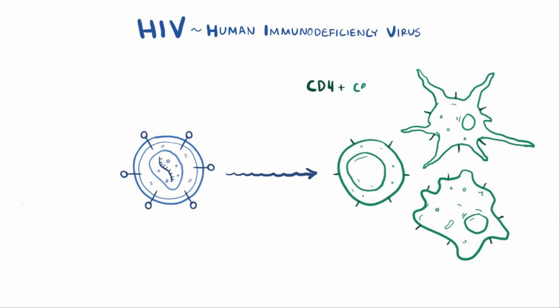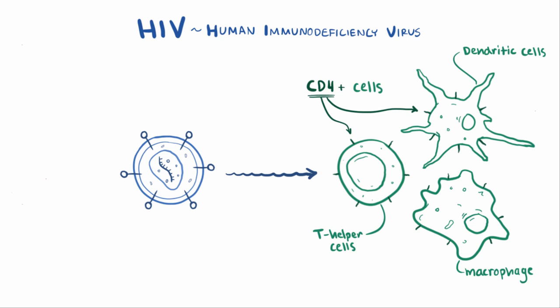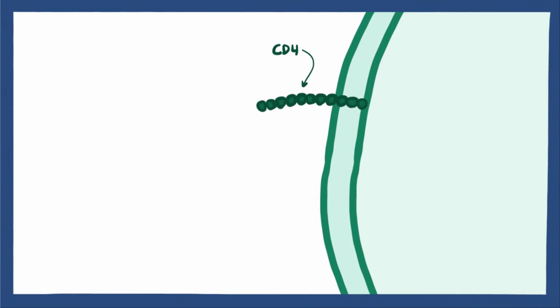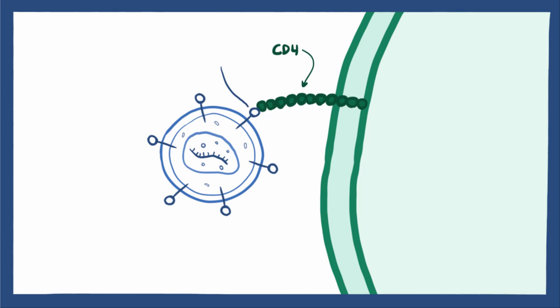HIV targets CD4-positive cells, meaning cells that have a specific molecule called CD4 on their membrane. Macrophages, T helper cells, and dendritic cells are all involved in the immune response and all have CD4 molecules, therefore they can be targeted by HIV. The CD4 molecule helps these cells attach to and communicate with other immune cells, which is particularly important when launching attacks against foreign pathogens. So this little molecule is pretty important for our immune system, but it's also extremely important for HIV. HIV targets and attaches to the CD4 molecule via a protein called GP120, found on its envelope.